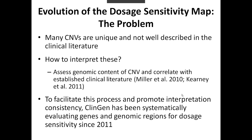Why do we need a resource like this? Some copy number variants, or CNVs, are recurrent and are well described in the literature. This includes CNVs mediated by segmental duplications, such as the 22Q11.2 deletion syndrome. But other CNVs are unique and not as well described in the literature. So when you need to interpret CNVs like these, what you often need to do is assess the genomic content of that CNV and correlate it with established clinical literature. We began work on our dosage sensitivity map in 2011 in an effort to assist laboratories in their evaluations of this genomic content, and by making such a tool publicly available, we also hope to promote consistency between laboratory interpretation.